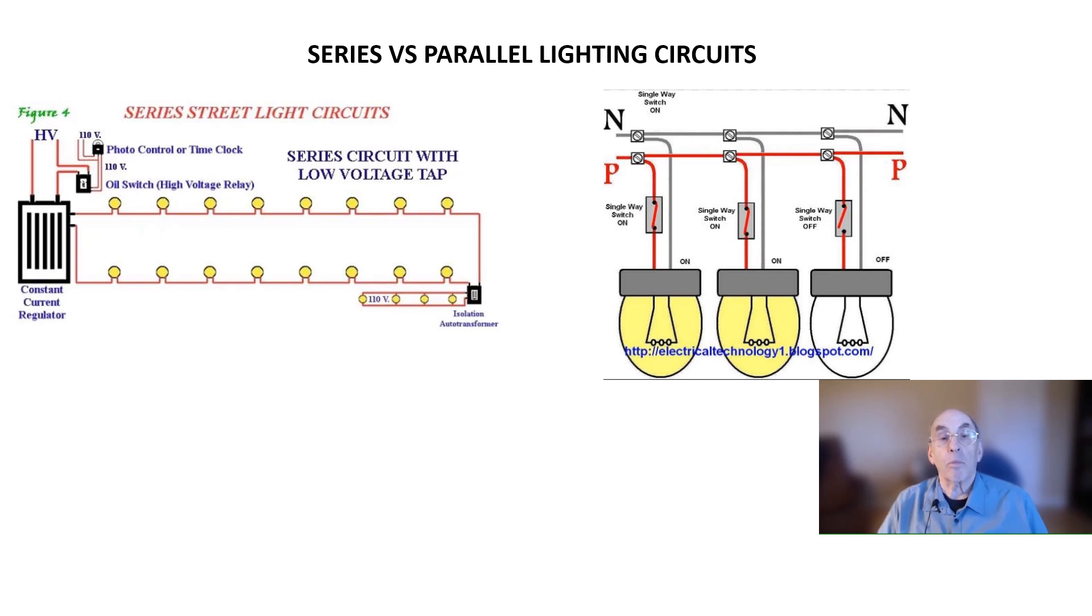But that causes a problem. With one less lamp operating in the series circuit, the output voltage at the transformer is now higher than that needed for the string. To deal with that problem,